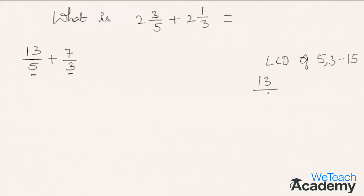So for 13/5, in order to get the same denominator that is 15, we need to multiply the numerator and denominator by 3. So 13 times 3 is 39 and 5 times 3 is 15.